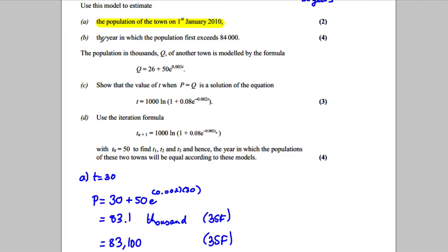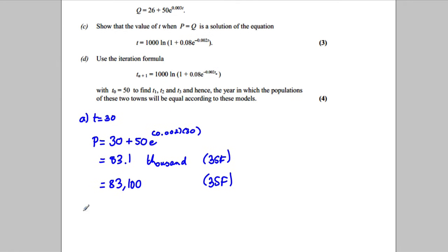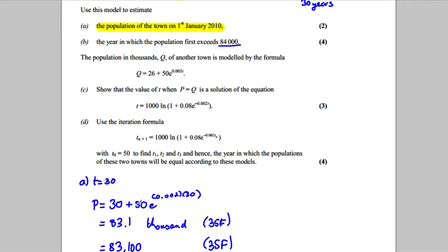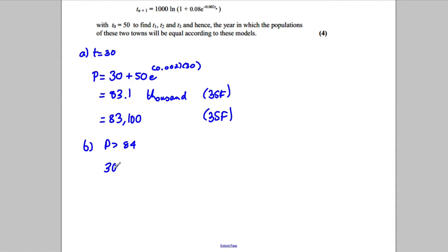Up here it says find the year in which the population first exceeds 84,000. So you want to find the T that first makes P bigger than or equal to 84. So our P is, remember it's 30 plus 50 e to the power of 0.002 T. And you want to find where that's bigger than 84. So let's solve this. Let's subtract 30 of both sides.